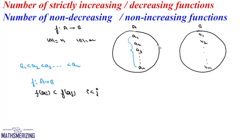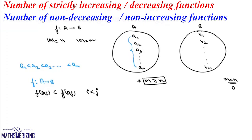Any strictly increasing function is a one-to-one function. So this function from A to B must be a 1-1 function, which requires M ≥ N. If M < N, there will be no 1-1 function possible, so the number of strictly increasing or decreasing functions will simply be zero. For the general case when M ≥ N, from the M elements we must select N elements to serve as images for each element in A, which can be done in MCN ways.